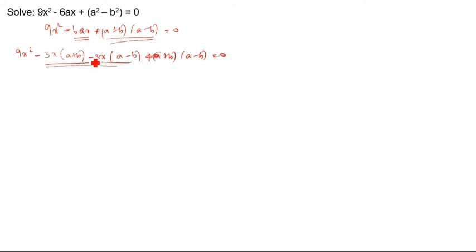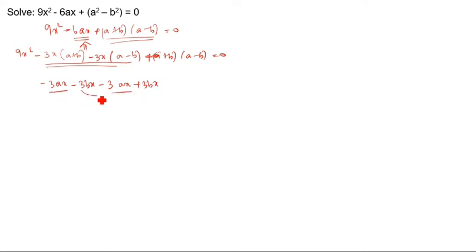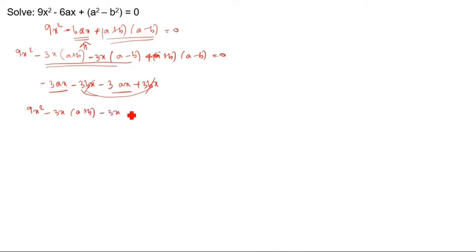Now we have to check this. The above answer should come out correctly. So: minus 3ax, minus 3ax, plus 3bx. You see: this is 3ax, this is 3bx. Minus into plus cancelled. So minus minus gives 6ax — minus 6ax. The answer checks out. So: 9x² minus 3x(a+b) minus 3x(a-b) plus (a+b)(a-b) equal to 0.